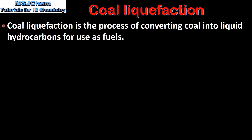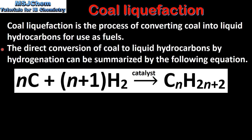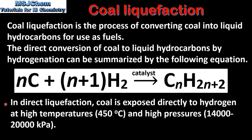Next we look at coal liquefaction. This is the process of converting coal into liquid hydrocarbons for use as fuels. The direct conversion of coal to liquid hydrocarbons by hydrogenation can be summarized by the following equation. In direct liquefaction, coal is exposed directly to hydrogen at high temperatures and high pressures.